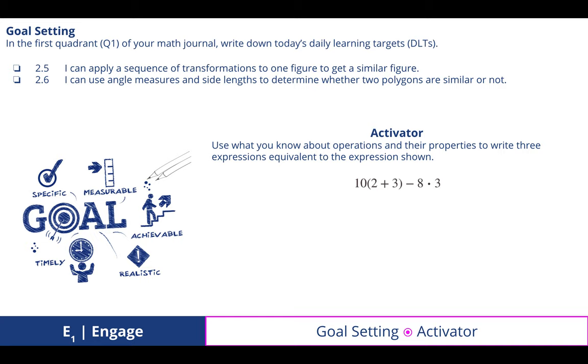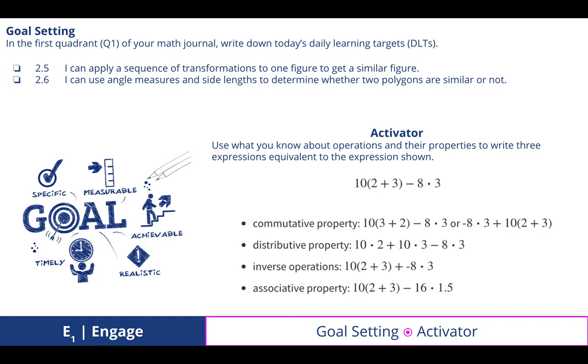A little activator here just to review ways to show equivalent expressions. What are some other ways to write this expression: 10 times the quantity of 2 plus 3 minus 8 times 3? Using those properties that we've learned last year, I've provided four examples: one showing the commutative property, distributive property, inverse operations, and associative property.